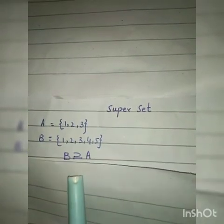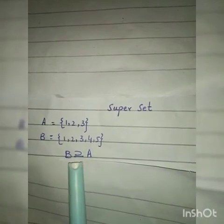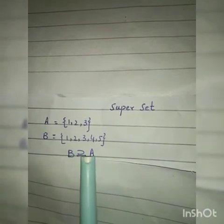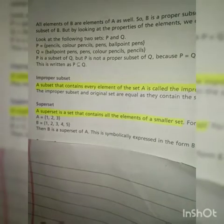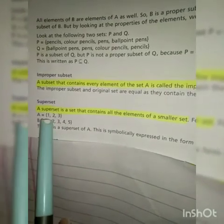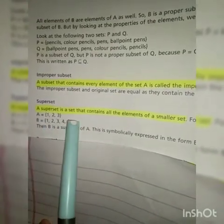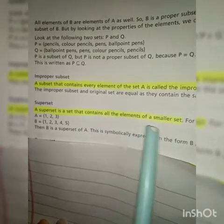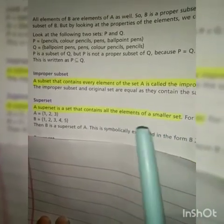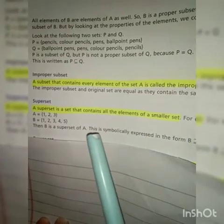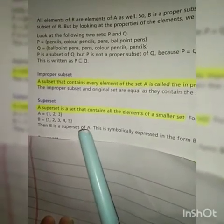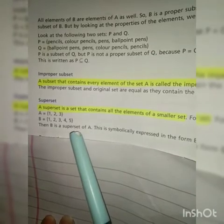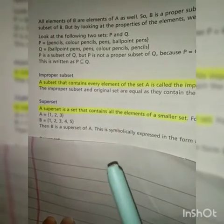اسے ہم لکھیں گے: B is superset of Set A۔ Super set کے لئے ہم یہ symbol use کرتے ہیں۔ Definition highlight کریں: A superset is a set that contains all the elements of a smaller set۔ یعنی جو set چھوٹا ہوگا اس کے تمام elements بڑے والے set کے اندر موجود ہوں گے، تو اس بڑے والے set کو ہم super set کہیں گے اس smaller set کا۔